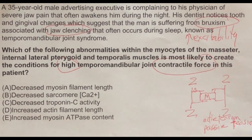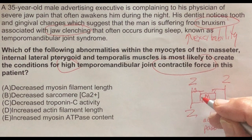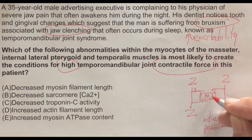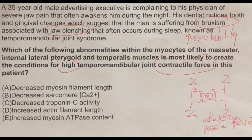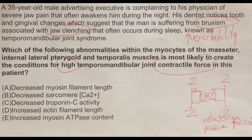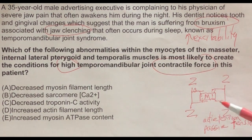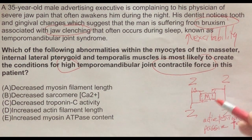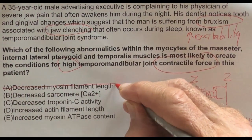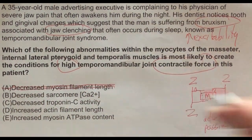Answer choice: decreased myosin filament length. If we decrease the myosin filament length, we're going to make the myosin shorter. Is that going to increase cross-bridging — which is responsible for the tension in a muscle that draws the Z lines together — or decrease it? It seems that if we decrease the myosin filament length, we'll have less cross-bridge cycling because there will be less overlap between actin and myosin. That would produce less tension, so we can eliminate that.